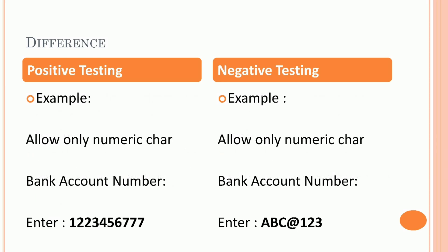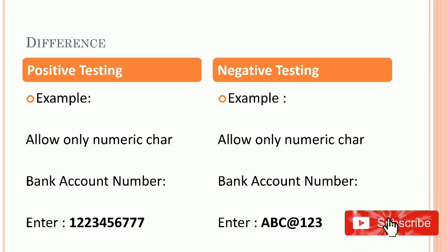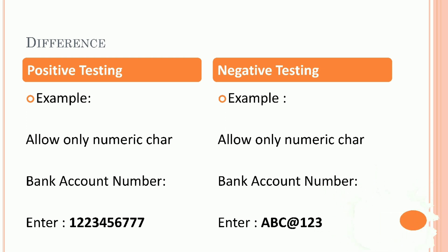Example of positive testing: allow only numeric characters in a bank account number. Enter: 1,223,456,777. Example of negative testing: allow only numeric characters in a bank account number. Enter: ABC@123.